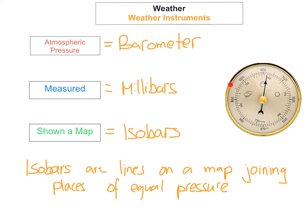This is what a barometer looks like. Right now the barometer is reading about 1012 millibars, which would be an area of high pressure. Normal atmospheric pressure is at 1000, anything below 1000 is low pressure, and anything above 1000 is high atmospheric pressure. So if you see 1010 on a map that's high; if you see 990 millibars, that's low.